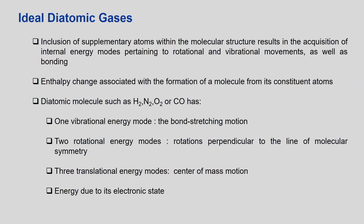When we add two atoms together with a bond, the molecular structure results in the acquisition of internal energy modes pertinent to rotational and vibrational movement. If you have read infrared spectroscopy, you know you can either stretch a bond or bend a bond, and doing so requires energy at a certain frequency. If this frequency matches the absorption of light it will show a spectrum — that is how infrared spectroscopy works. Similarly, rotational energy states arise because atoms rotate around their axis, and again there will be energy levels associated with those rotations.